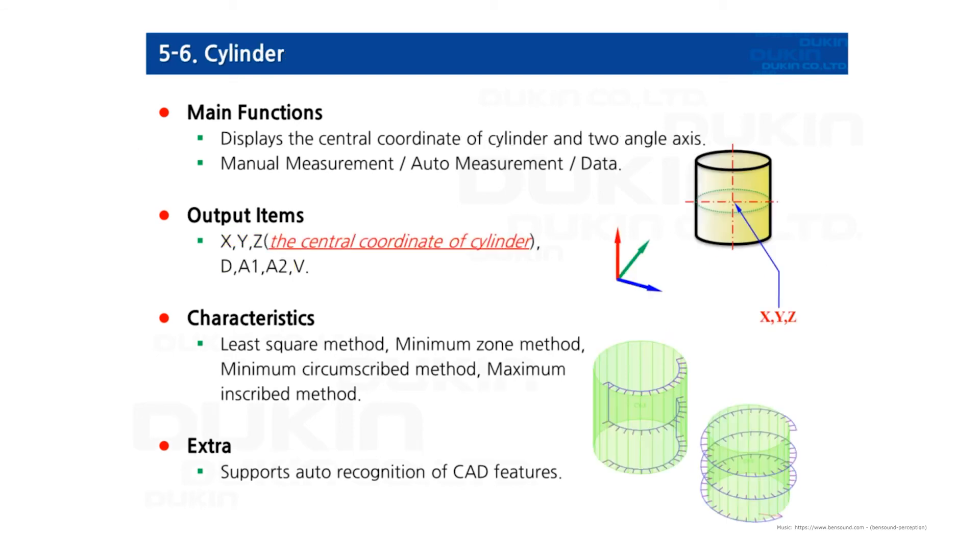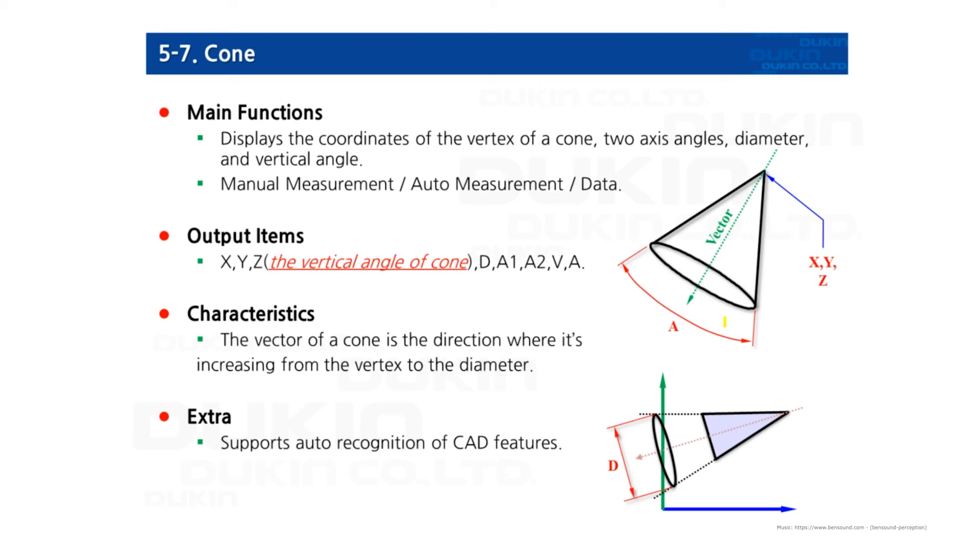And the cylinder. The minimum measuring points required of measuring a cylinder is eight points. In output, X, Y, Z at the center of the cylinder and diameter. And also A1 and A2 because it has axis. The axis of the cylinder goes through the center of the cylinder, and it has two projected axes. The calculating methods also apply the same as the circle.